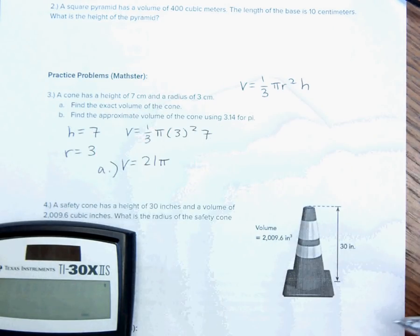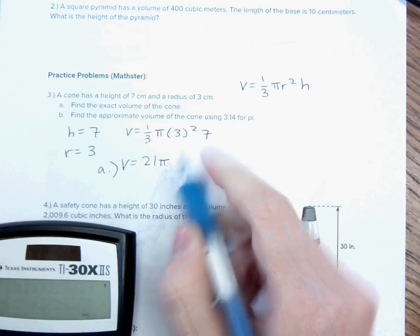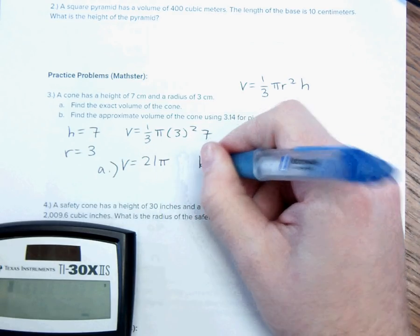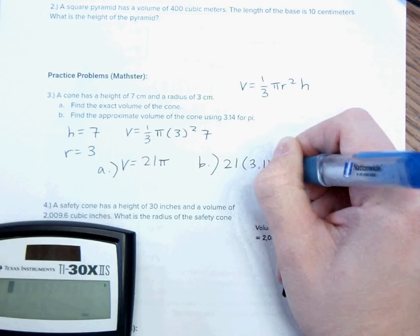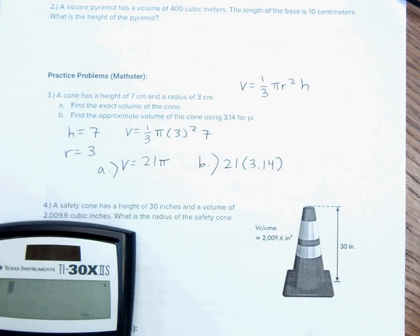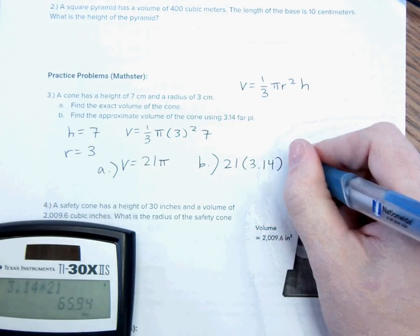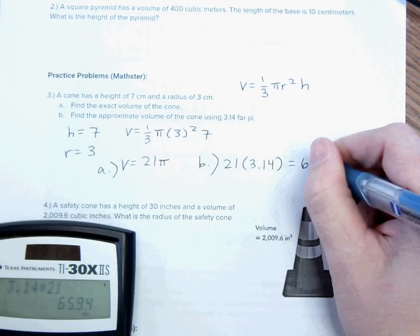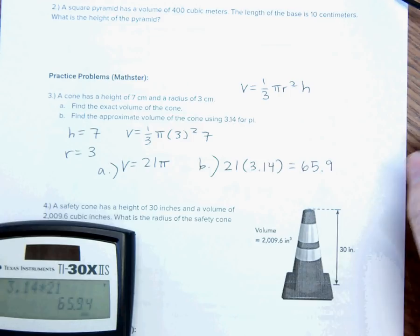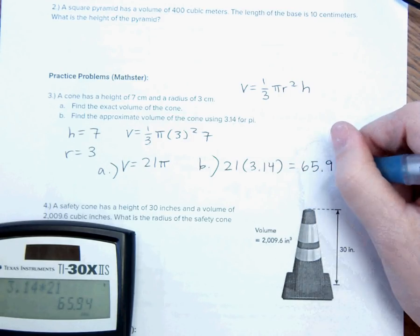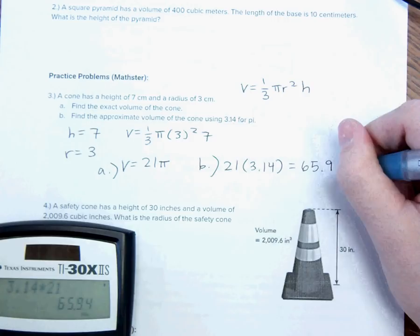So, 21 pi is my exact volume. Pi is just a symbol here. Now, if I want to find my approximate volume, I do 21 times 3.14. So, instead of having pi, I'm going to multiply by my approximation where 3.14 is pi. So, 3.14 times 21, and that gives me 65.9. And I'm going to round to the nearest tenth, 65.9, and that is centimeters cubed.